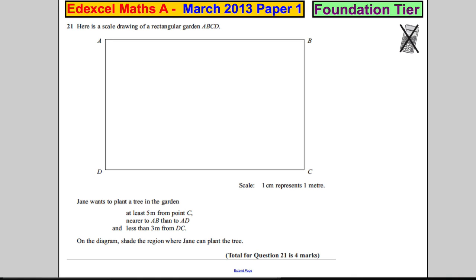Question 21: Here is a scale drawing of a rectangular garden ABCD. Jane wants to plant a tree in the garden, and here are the facts she needs to consider. She must be at least five centimeters from point C, so more than five centimeters from point C. Nearer to AB than AD, so nearer to here than she is here. And less than three meters from DC.